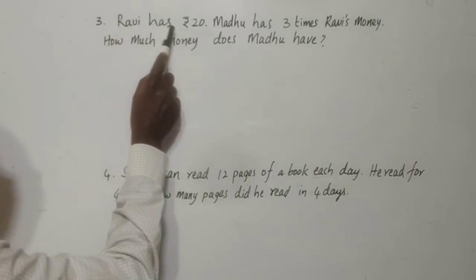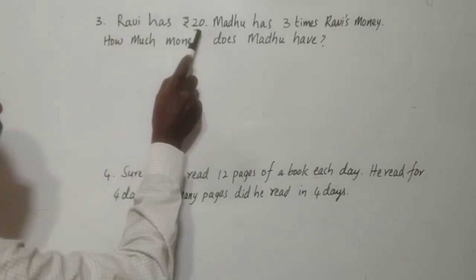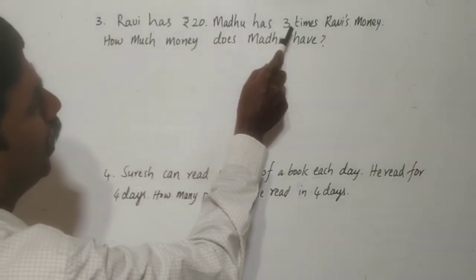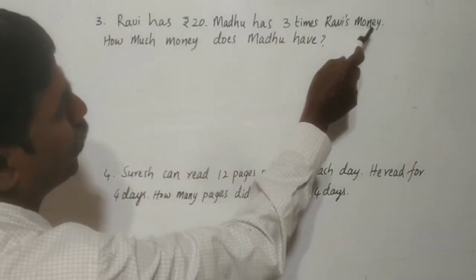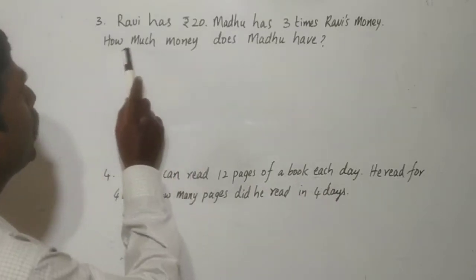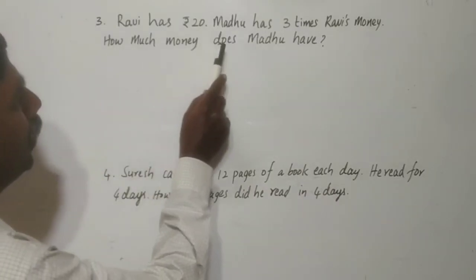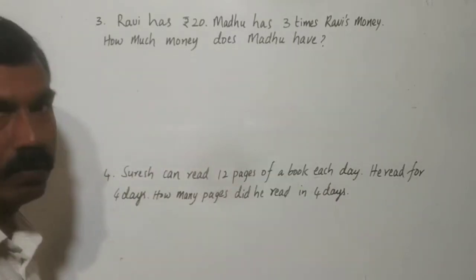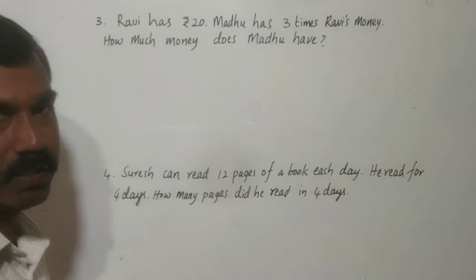Ravi has rupees 20. Madhu has 3 times Ravi's money. How much money does Madhu have?